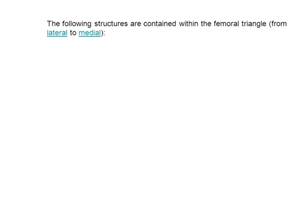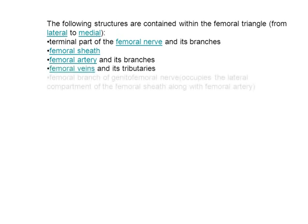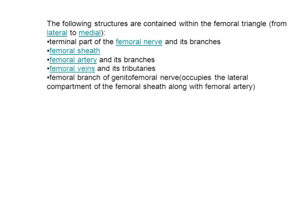The following structures are contained within the femoral triangle from lateral to medial: the terminal branches of the femoral nerve and its branches; the femoral sheath; the femoral artery and its branches; the femoral vein and its tributaries; and the femoral branch of the genitofemoral nerve, which occupies the lateral compartment of the femoral sheath along with the femoral artery.